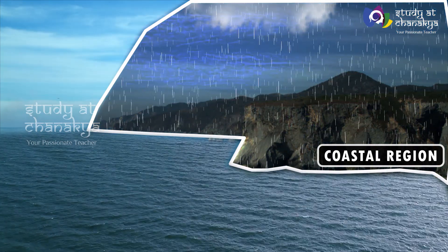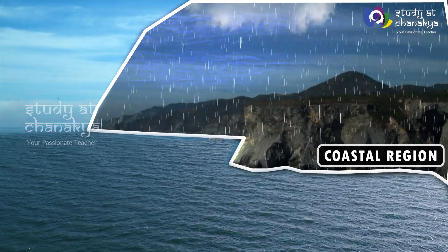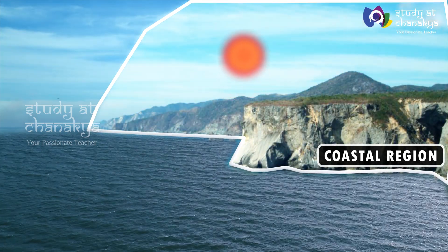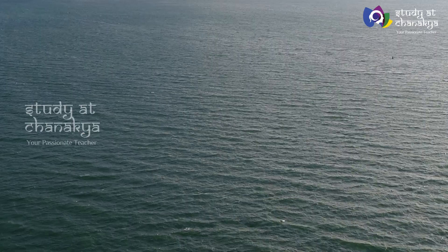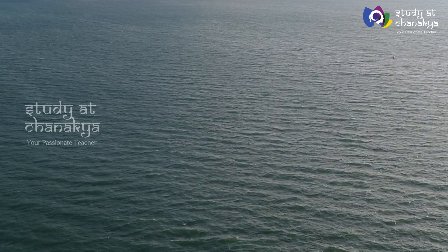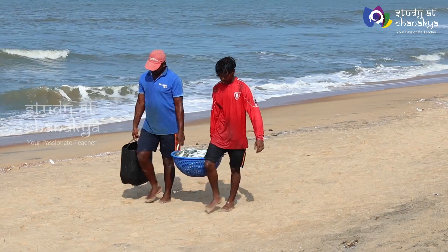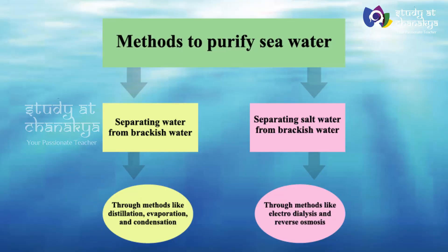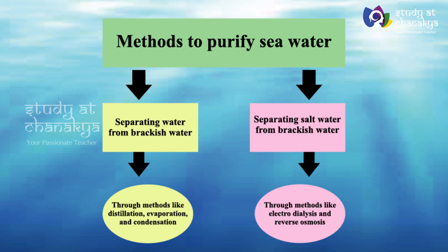Ocean currents influence the climate of coastal regions, and oceans have a decisive role in controlling the climate along coastal areas. The sea breeze during the day and the land breeze at night regulate the temperature over the coast. Oceans play a part in the formation of rain, wind, and cyclones, and are useful in mineral deposits, power generation, and as a source of food. Sea water can be purified for drinking through distillation, evaporation, and condensation, or through electro-dialysis and reverse osmosis for separating salt from brackish water.